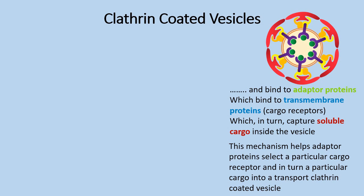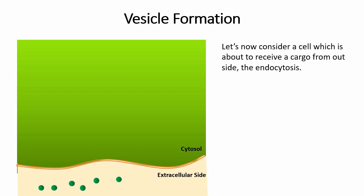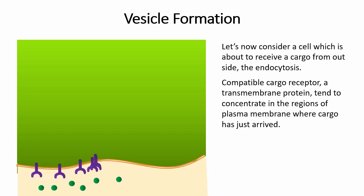Let's now consider a cell which is about to receive a cargo from outside. Compatible cargo receptors, a transmembrane protein, tend to concentrate in the regions of plasma membrane where cargo has just arrived.